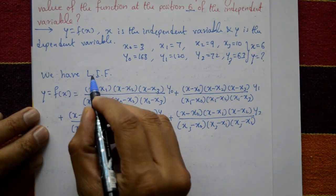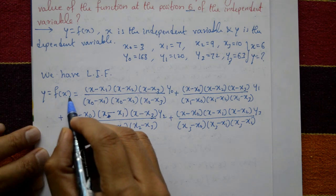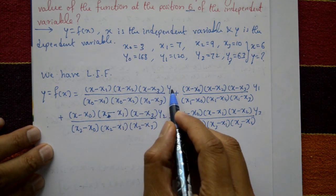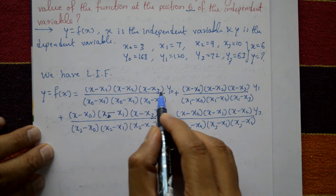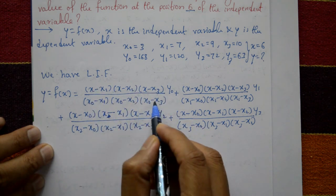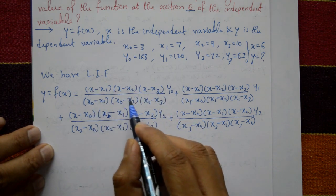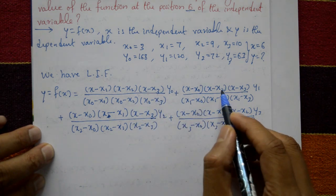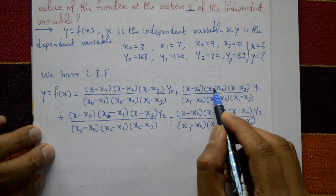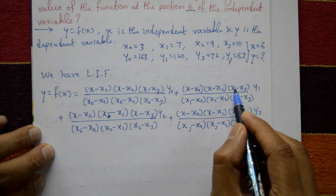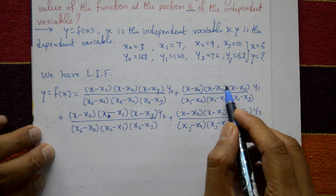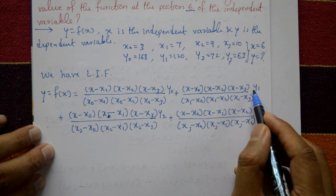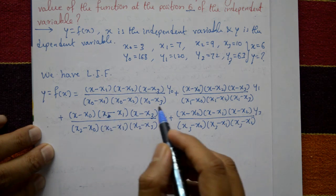Now we have Lagrange's interpolation formula. y is equal to f of x: (x minus x0)(x minus x2)(x minus x3) times y0 divided by — excluding x0 in numerator, including x0 in denominator — (x0 minus x1)(x0 minus x2)(x0 minus x3). Plus second term: (x minus x0)(x minus x2)(x minus x3) times y1, divided by (x1 minus x0)(x1 minus x2)(x1 minus x3).